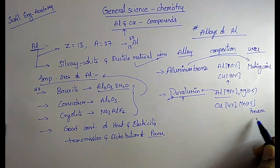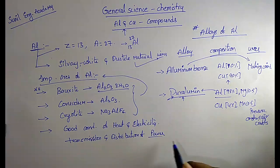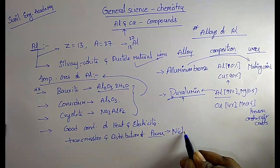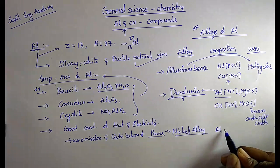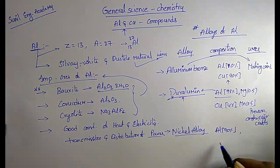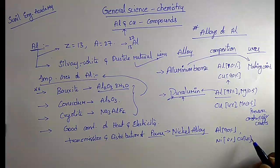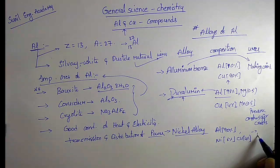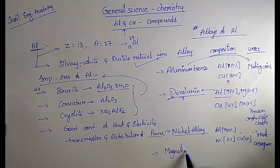Duralumin is used for making pressure cookers and also in aircrafts. The next important alloy is nickel alloy. In nickel alloy, aluminium is 90%, nickel is 6%, and copper is 4%. It is used in aerospace manufacturing.